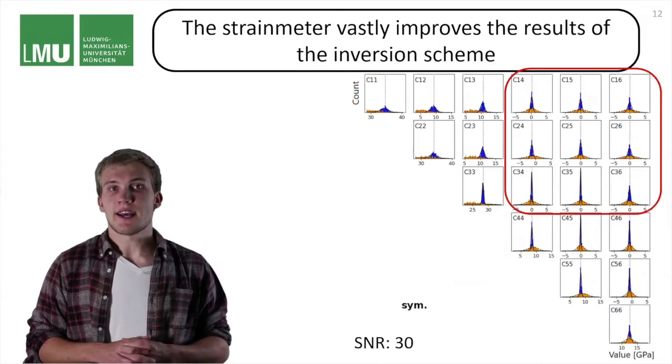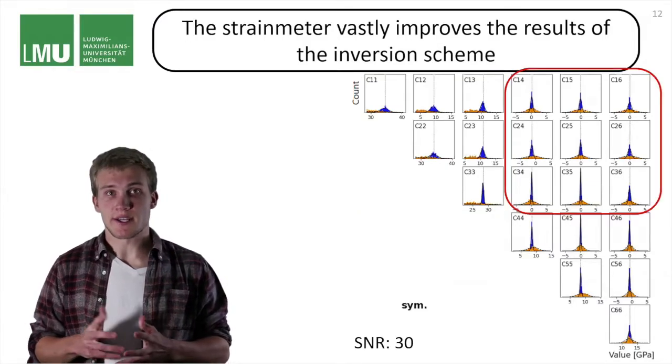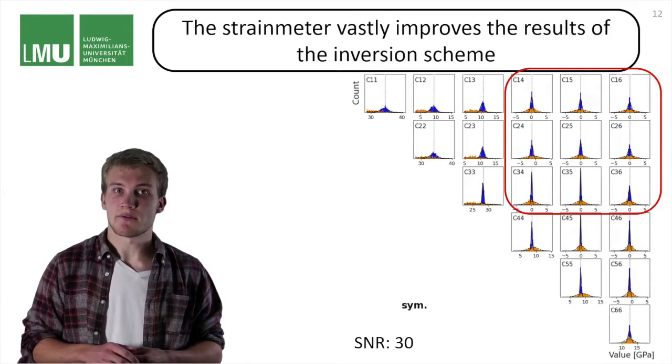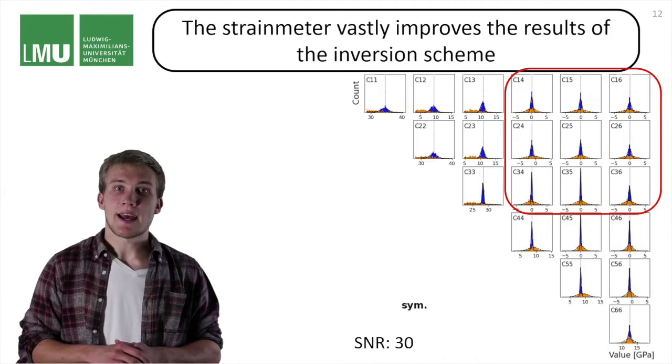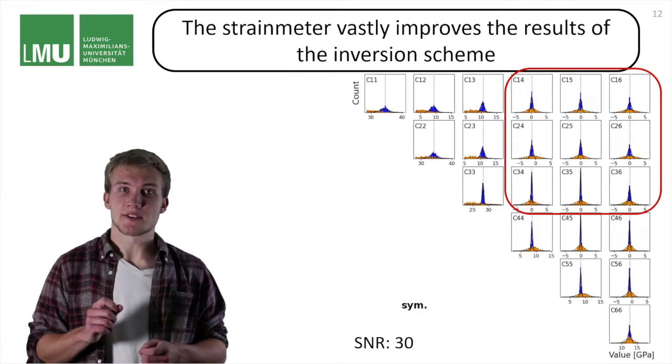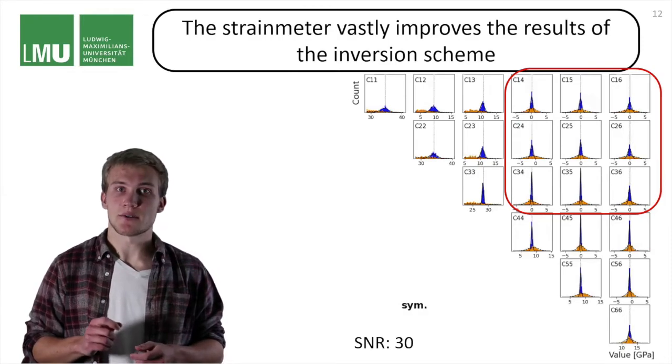Now we can again look at the in-between parameters over here. There again should be a few non-zero entries because we have used a tilted VTI medium. And if you look at the numbers, you can already see that we can confidently resolve some of these non-zero entries.